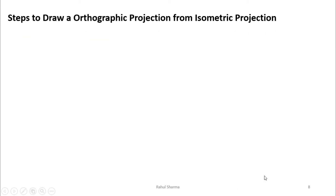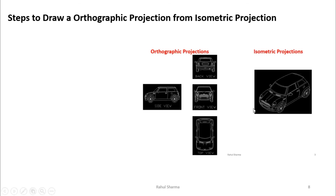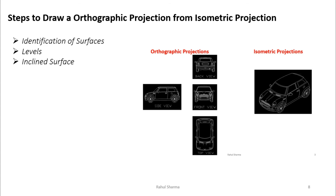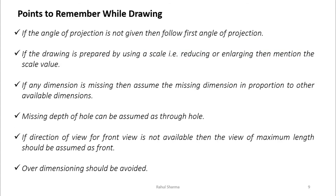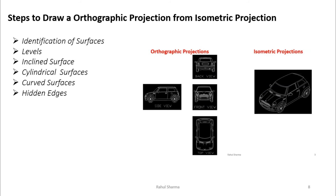Now we look at the steps to draw orthographic projection. The isometric view shows front, top, and side all in one diagram; orthographic shows each view separately. Whenever we draw orthographic projection, we do identification of surfaces, levels, inclined surfaces, cylindrical surfaces, curved surfaces, and hidden edges. These are not predefined steps but things to check in the main diagram before making the orthographic projection. Separate videos are available for each.